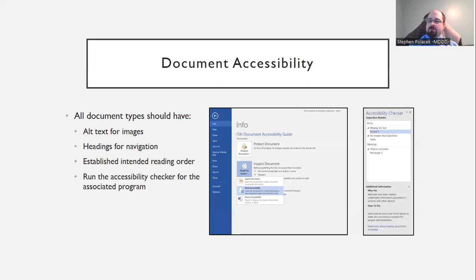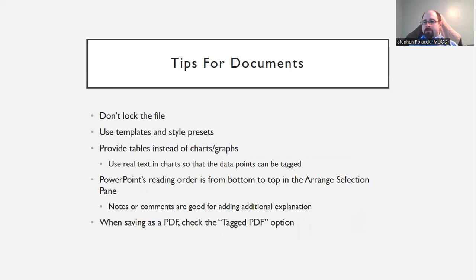Once you start getting comfortable making those fixes, you can move to the next step: looking at more complex documents, things like tables, and then going into better alt text and more useful semantics. Some more tips for your documents: first, don't lock the file. If you don't want people editing it, locking actually stops assistive technology like screen readers from reading the document. So in doing that you're essentially cutting them out of all the work you've done. Don't lock the document. In the classroom, it's best if you don't lock it, so people can make their own notes — but keep a clean copy available.